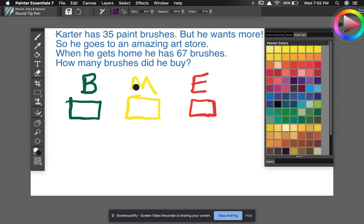So let's go up to this problem, and as we read this, I want you to make a movie in your brain. This will help you to set up your equation correctly. So Carter has 35 paintbrushes, but guys, he wants more. So he goes to an amazing art store. When he gets home, he has 67 brushes. So my question for you is how many brushes did he buy?